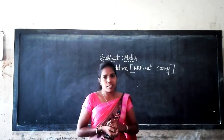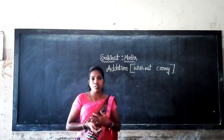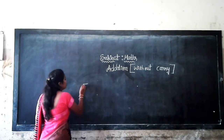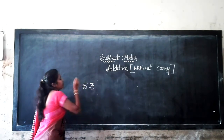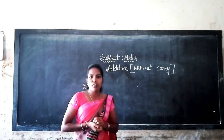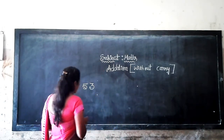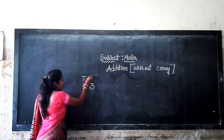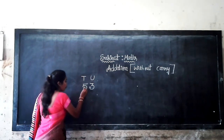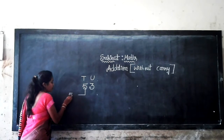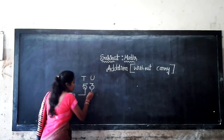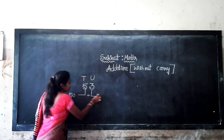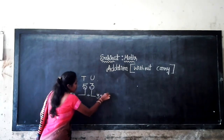Now I will explain place value. In the previous class, you already learned what place value is. For example, 53 — what is the place value of 53? The 5 is in the tens place, meaning 5 tens equals 50. And the 3 is in the units place, meaning 3 ones equals 3. So 50 plus 3 is equal to 53.